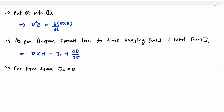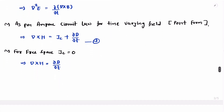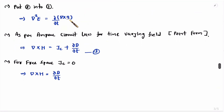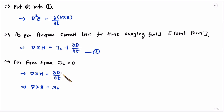Since JC is zero for free space, equation three simplifies to del cross H equals del D by del T. Now we wanted del cross B, but we have del cross H. To convert del cross H into del cross B, we multiply by mu zero on that side. So del cross B equals mu zero times del D by del T. And since D equals epsilon naught E, we can write this as del cross B equals mu zero epsilon naught del E by del T. Let us call this equation four.